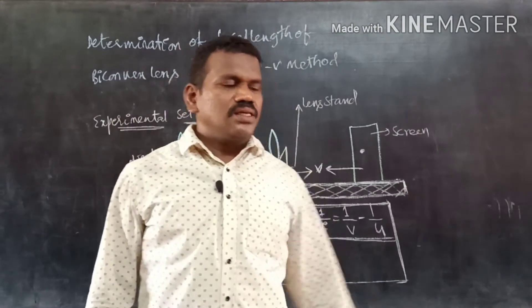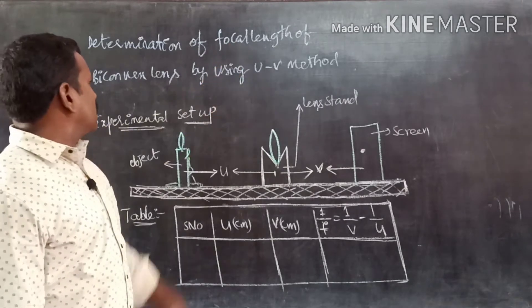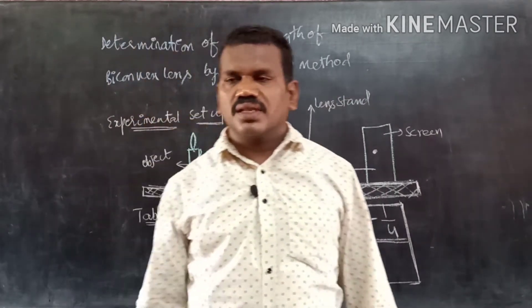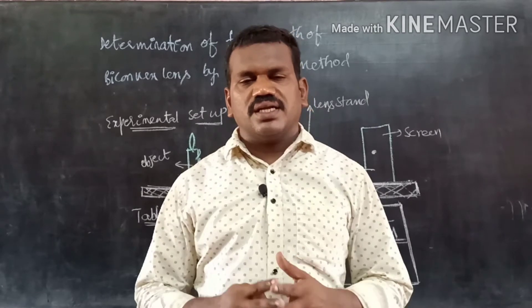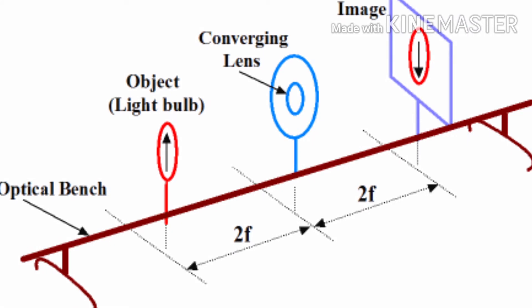Hi students, in this module we are going to discuss the determination of focal length of a given biconvex lens by using the UV method. In the earlier classes, we already learned how to find the focal length of a convex lens, how to identify images, and how to study the properties of images. Now, let's look at the experimental setup.